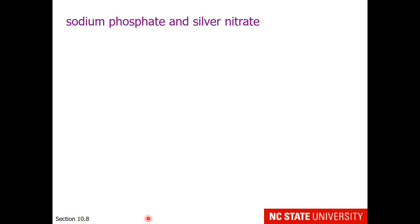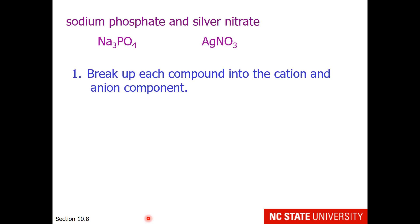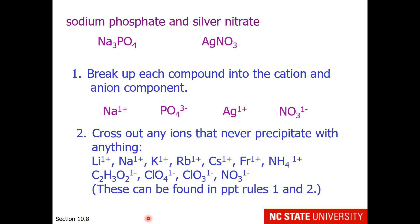Here's an example of following those steps. Suppose we are given a solution of sodium phosphate and a solution of silver nitrate. Here's the formula for sodium phosphate and silver nitrate. First, let's break up each compound into the cation and anion component. This means you're going to have to remember your charges on cations and polyatomic ions. So we'll have sodium 1+, phosphate 3-, silver 1+, and nitrate.